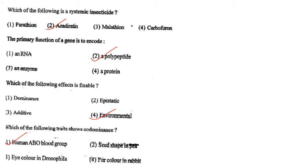Next one: The primary function of a gene is to encode option 1, an RNA; option 2, a polypeptide; option 3, an enzyme; option 4, a protein. Answer is option 2: a polypeptide.